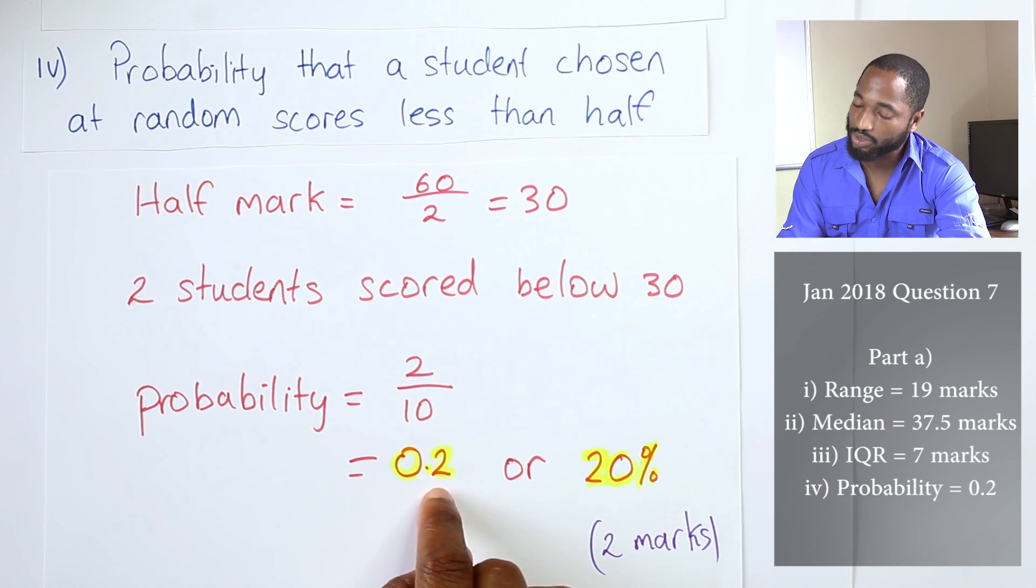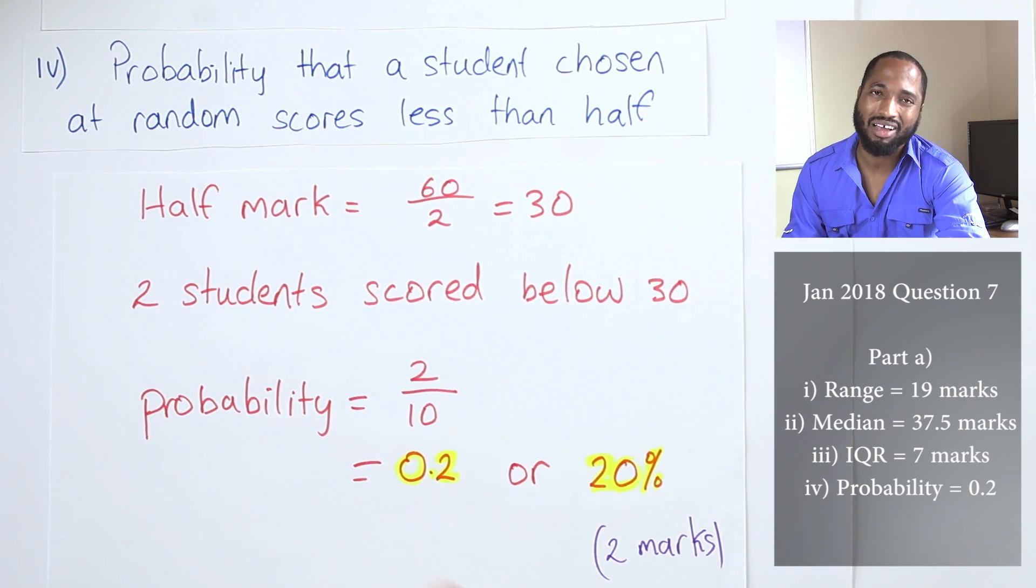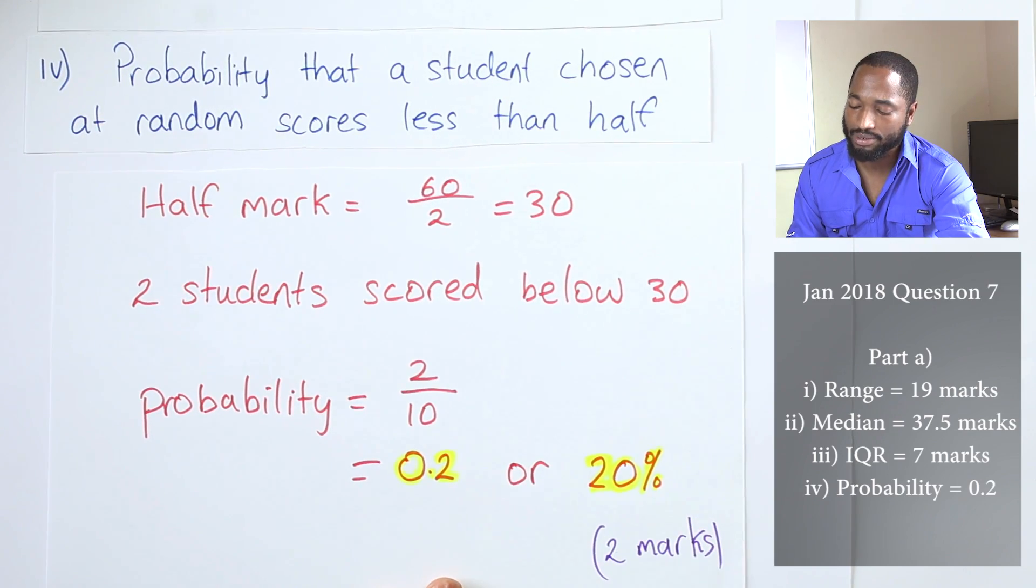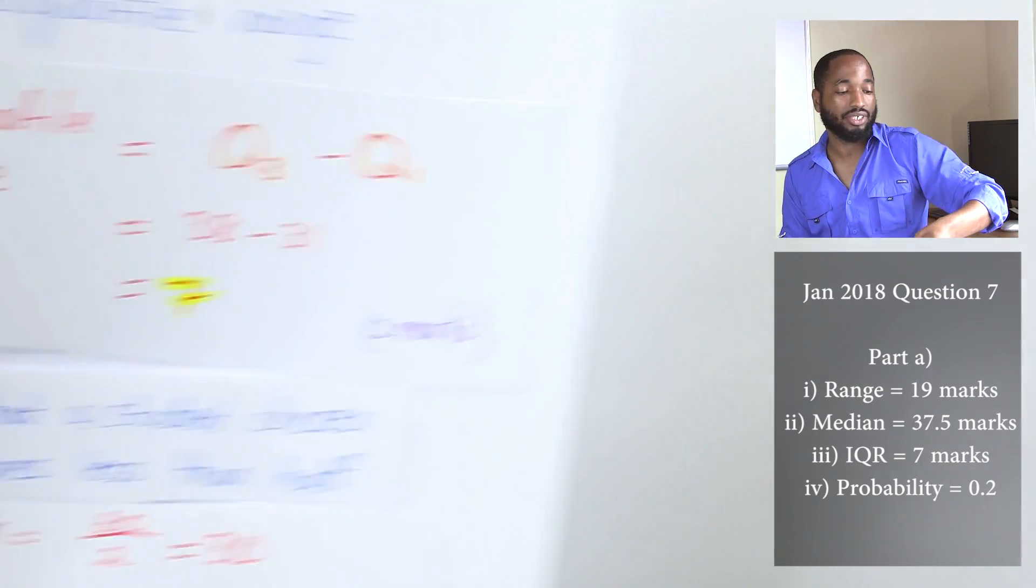You can express probability in three different ways. That's two marks there. Next two marks there. Finally, let's go to the last part of the question.